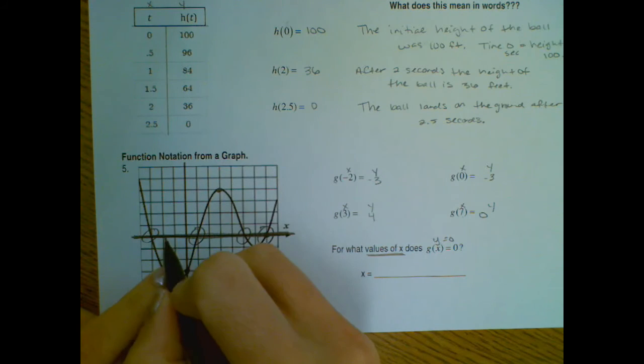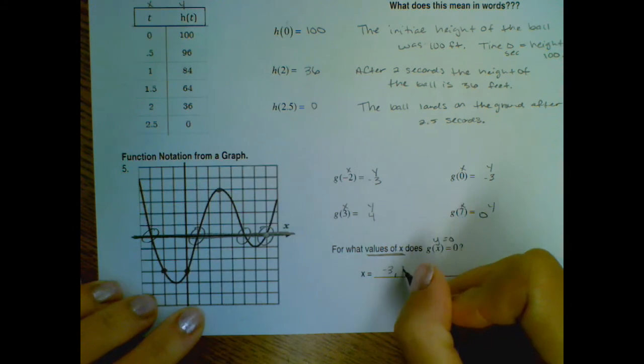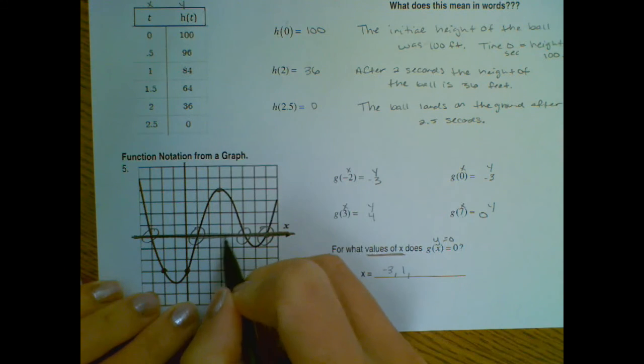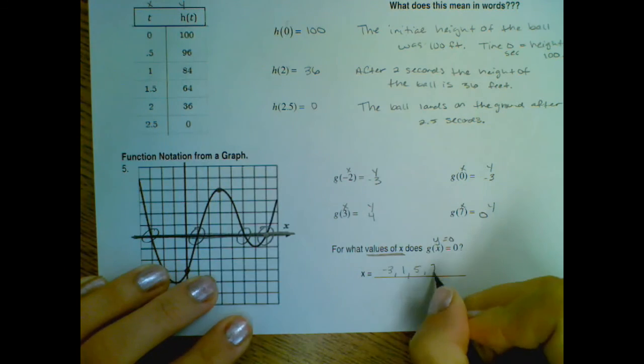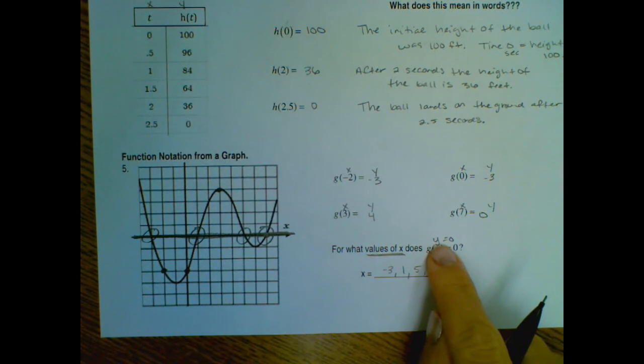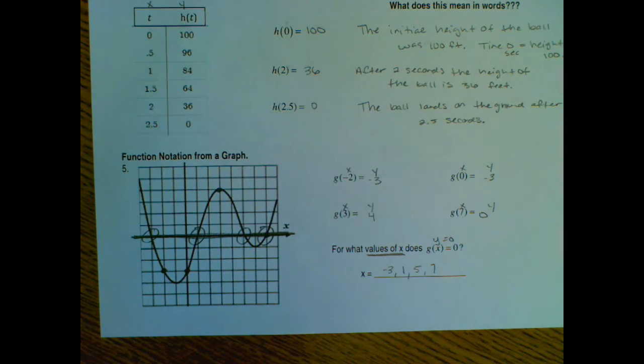So that would be negative 3, positive 1, 5, and 7. So there are four different x values where y equals 0.